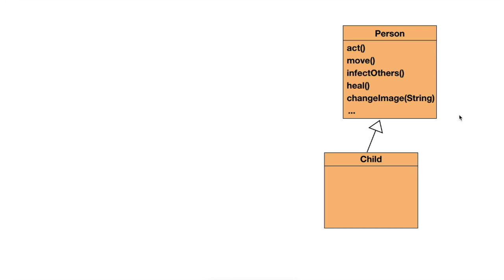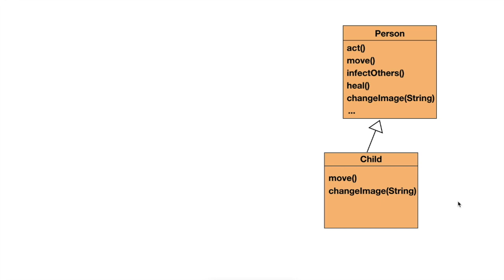What we then also did is we redefined some of the methods in the Child class. The Move and ChangeImage methods — we added them. That situation is called overriding: we have a redefinition of methods that were inherited in the Child class. So that is our situation that we created in our code.